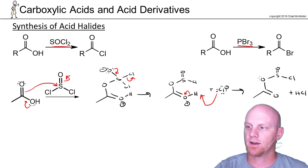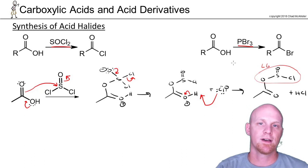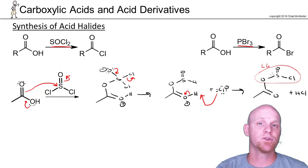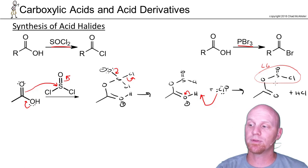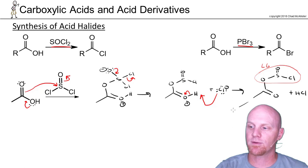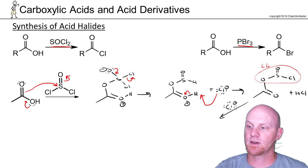The big thing going on here is that this group is a great leaving group — that's the whole goal. From here on out, it's just nucleophilic acyl substitution. We're going to replace this with a chloride ion. There should be a chloride ion floating around in solution — it's also a product of the reaction, so we can manufacture one.